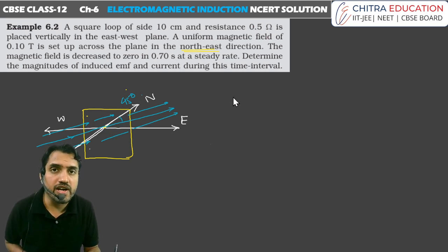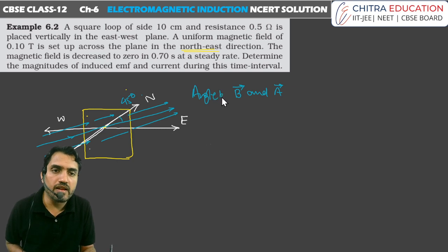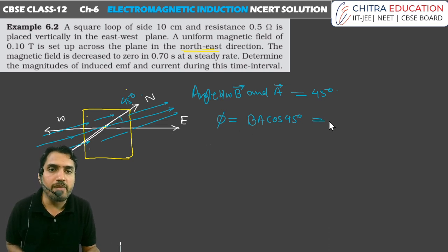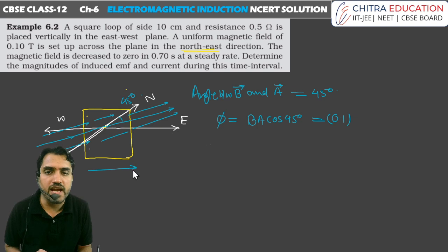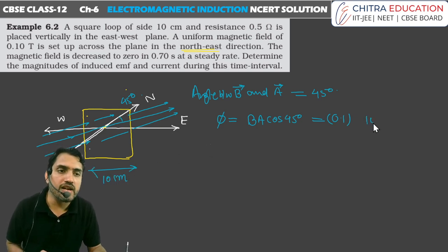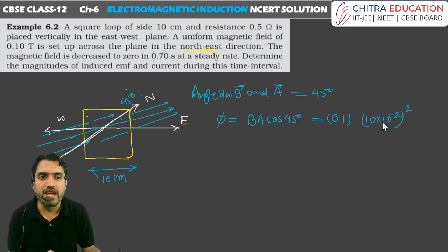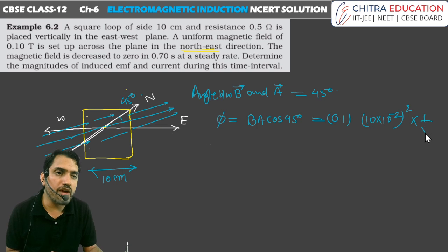The angle between the area vector and the magnetic field is 45 degrees. So if we talk about flux, flux = B into A into cos 45 degrees. The value of B is 0.1 tesla. The area of the square loop — the side is 10 cm, so area = (10 × 10⁻²)² square meters. And cos 45 = 1/√2.